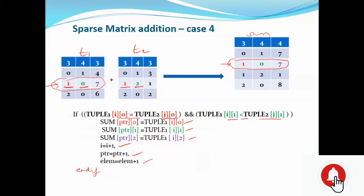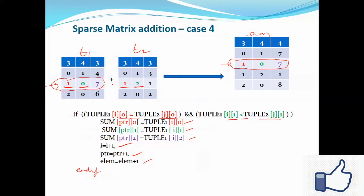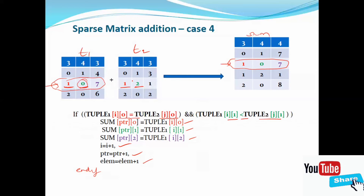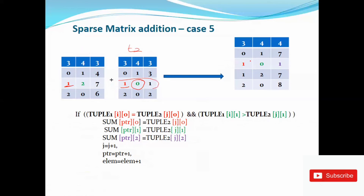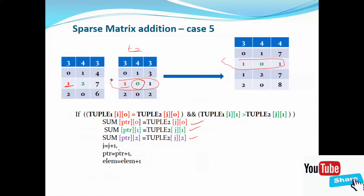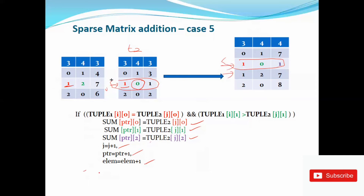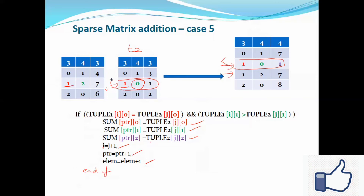The fifth case is tuple 2 in the column number. The tuple 1 is compared to tuple 2. Tuple 2 is the field of the column — the value is copied. Tuple 2's JV and PTR are updated. The main sparse matrix addition is implemented.